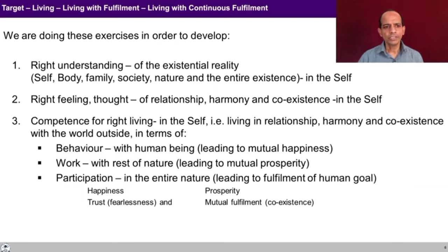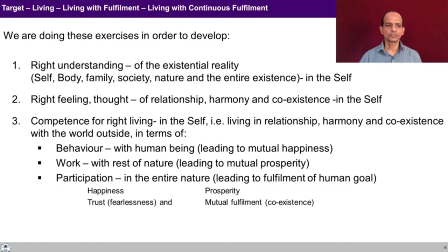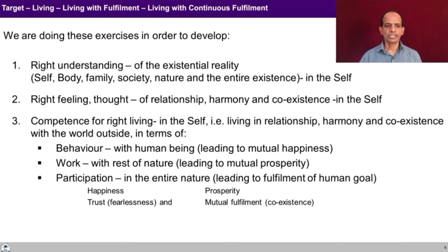We are doing these exercises to develop these three things. When you say right understanding in the self, what is to be understood? It is the complete existence — the existential reality has to be understood. When we talk about existential reality, it starts from the self. I have to understand the self, I have to understand the body, I have to understand the coexistence of self and body, how the two are interacting. I also have to understand the family, the society, the nature, and ultimately the entire existence.